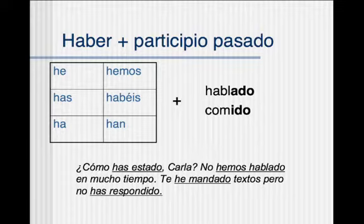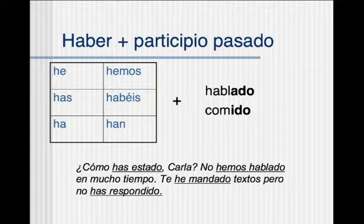When we put these together, we have haber and then one of these participios pasados with ADO or IDO at the end. Here's a little example: ¿Cómo has estado, Carla? No hemos hablado mucho tiempo. Te ha mandado textos, pero no has respondido. — How have you been, Carla? We haven't spoken in a long time. I have sent you texts, but you haven't responded. So he, has, ha, hemos, habéis, han is the 'have,' and then done something.